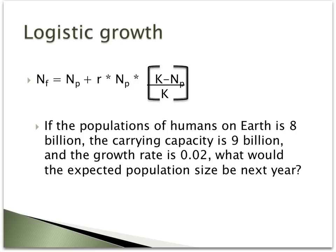Logistic growth uses the same variables as exponential growth but with one addition: the letter K. K stands for carrying capacity, or the maximum number of individuals that the environment can sustain long term. In this example problem, if the population of humans on Earth is currently 8 billion, the carrying capacity is 9 billion, and the growth rate is 0.02, what would the expected population size be next year?